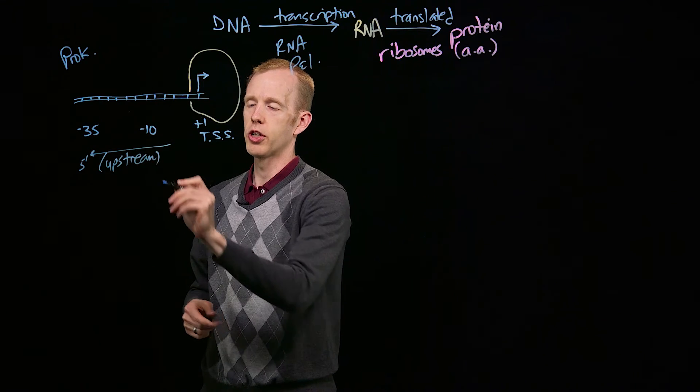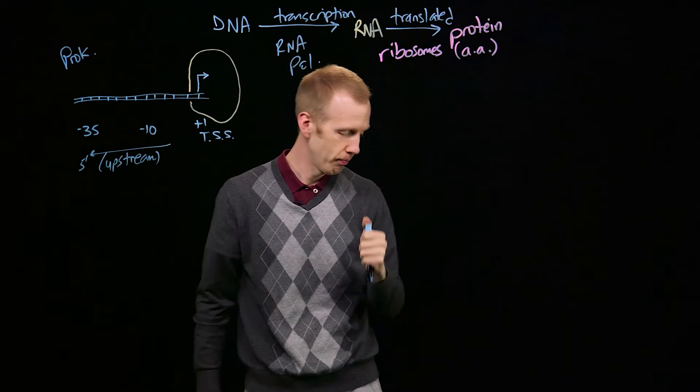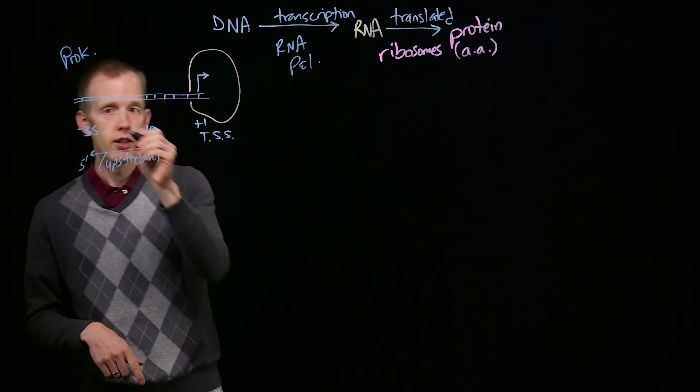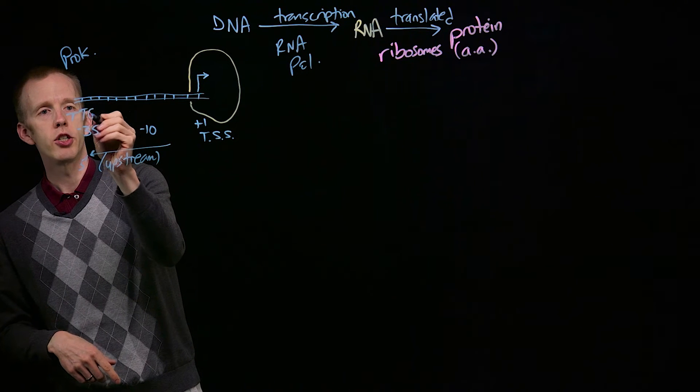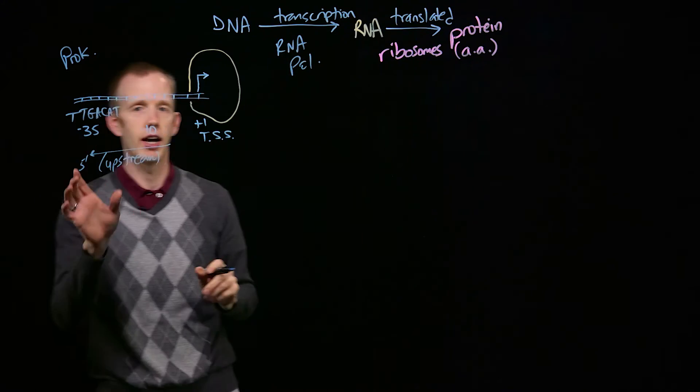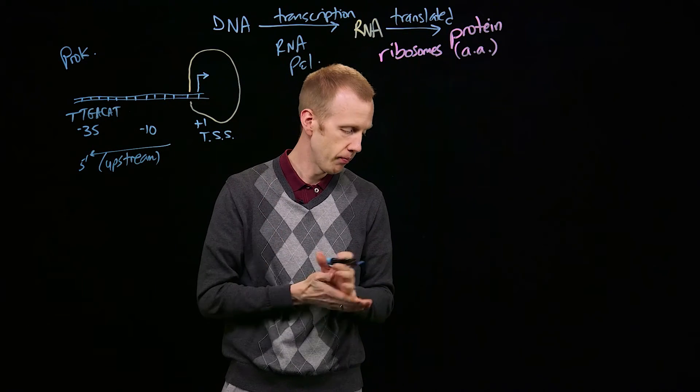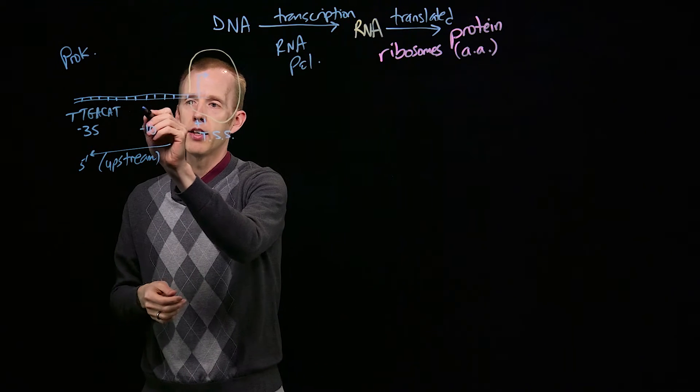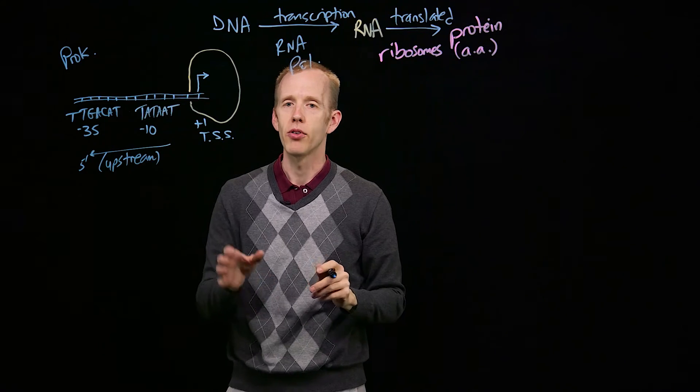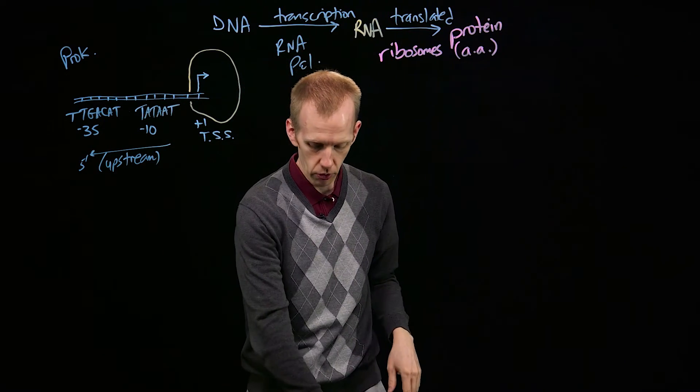Geneticists use this terminology a lot. Upstream, meaning to the 5' direction. Downstream, meaning 3'. And those sequences are T-T-G-A-C-A-T, so 7 nucleotides, about 35 base pairs upstream of where transcription is going to begin. And then T-A-T-A-A-T, about 10 nucleotides upstream of where RNA polymerase is going to be located.